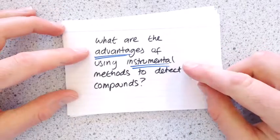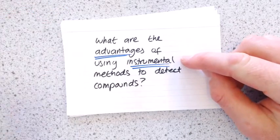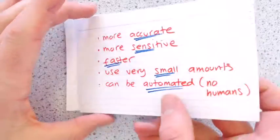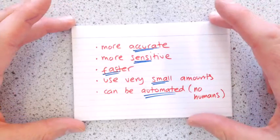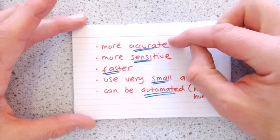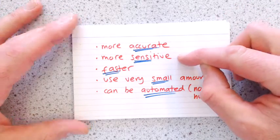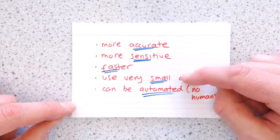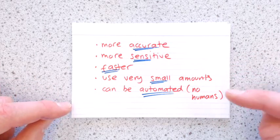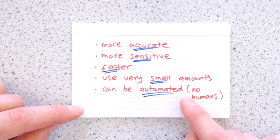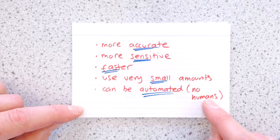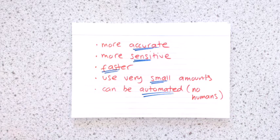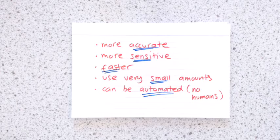What are the advantages of using instrumental methods to detect compounds? So if you use an instrument rather than something in the lab, they're more accurate, they're more sensitive, it's faster. You only need very small amounts of material. And also it can be automated, so you don't need quite as much human interaction. You can leave these things running overnight. You go home, come back to it in the morning, all the answers are there for you.